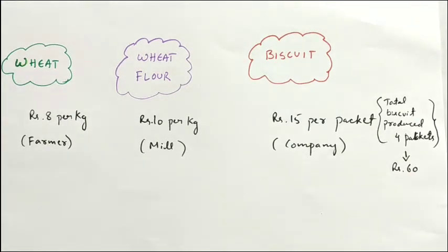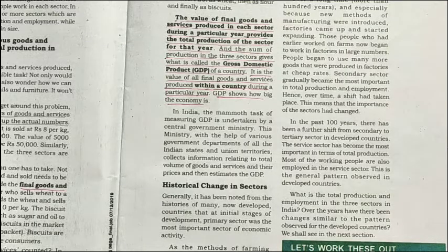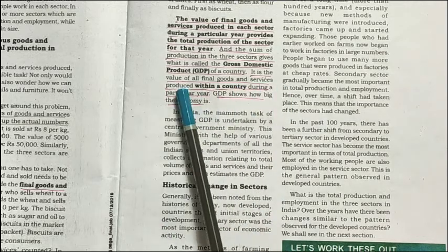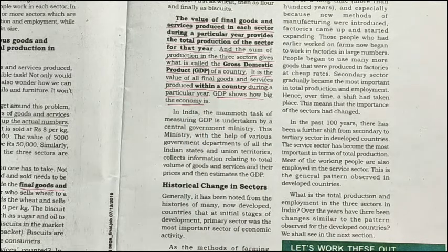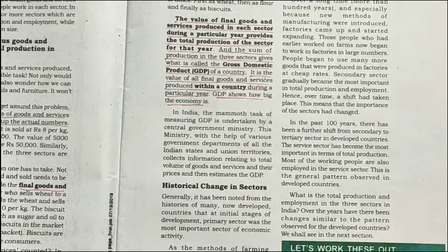The value of final goods and services produced in each sector during a particular year provides the total production of that sector. The sum of production across all three sectors gives what is called the Gross Domestic Product (GDP). GDP is the value of all final goods and services produced within a country during a particular year. It shows how big the economy of a country is, and it includes only products within the country.